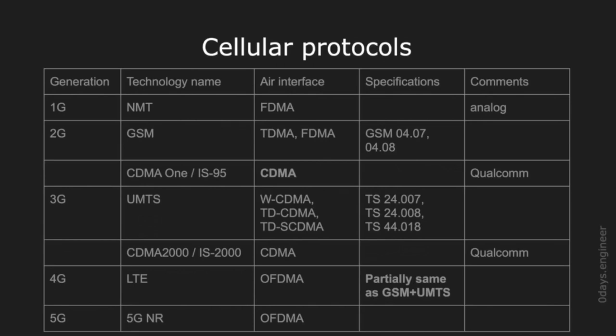The second most important thing about cellular protocols is the air interface — the lowest-level protocol that defines how the cellular signal is digitized and read from the electromagnetic wave, and how different players divide the spectrum. Historically there existed two main implementations of this low-level protocol: TDMA and CDMA. TDMA, time division multiple access, divides the electromagnetic spectrum within the radio band into time slots rotated in a round-robin manner by mobile phones so they speak in turns. TDMA was the base for GSM technology.